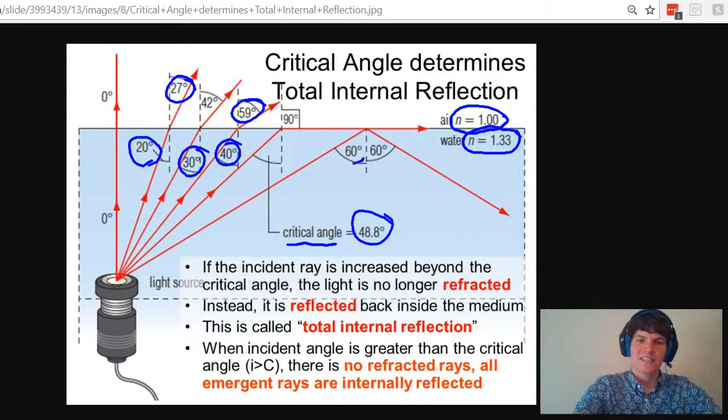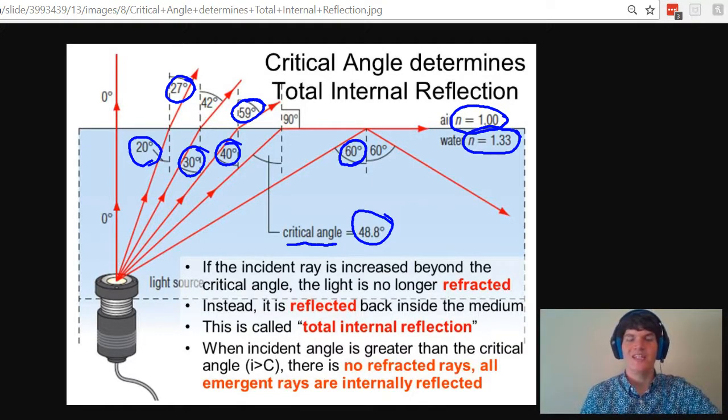For instance, in this case the incident angle is 60 degrees, which is higher than the critical angle of 48.8 degrees, thus all we see is reflection. All the light that would have been refracted is now being reflected inward.